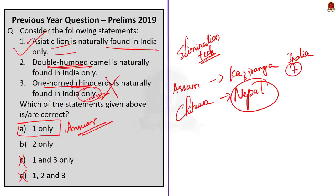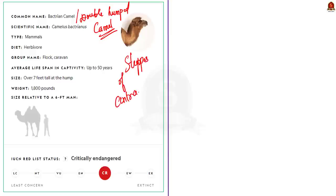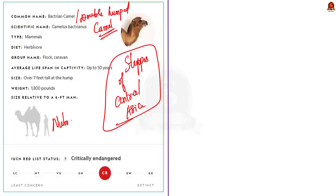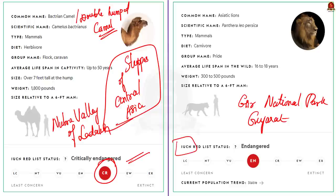The Bactrian camel is the double-humped camel given in the question. It is a large even-toed ungulate native to the steppes of Central Asia — found in Pakistan, Afghanistan, and Kazakhstan, though I think it is extinct in Kazakhstan. In India it is found in the Nubra Valley of Ladakh. Its IUCN status is critically endangered. Now the Asiatic lion is found naturally in India, specifically in Gir National Park, which is its last natural habitat. The IUCN status of the Asiatic lion is endangered.